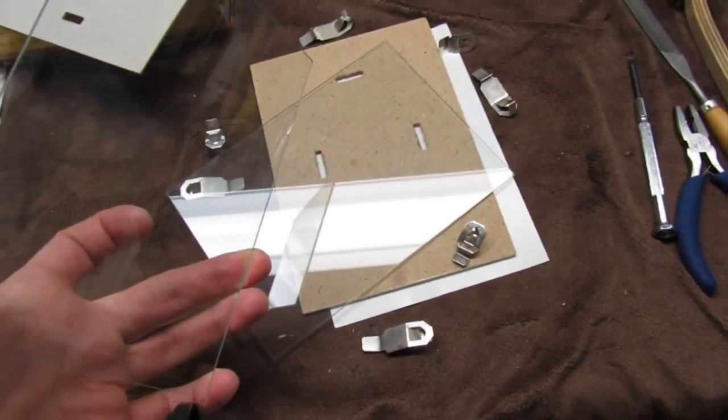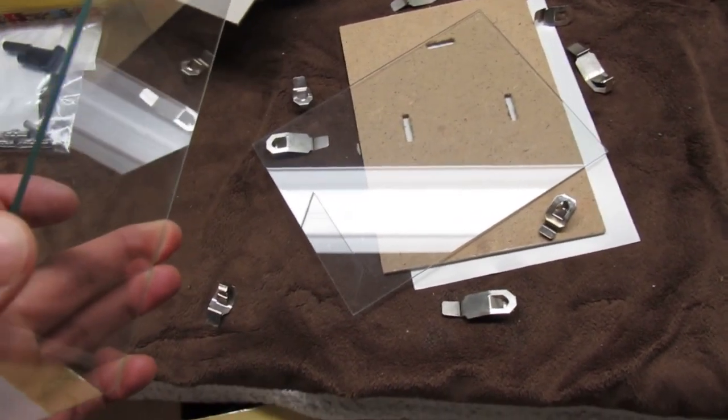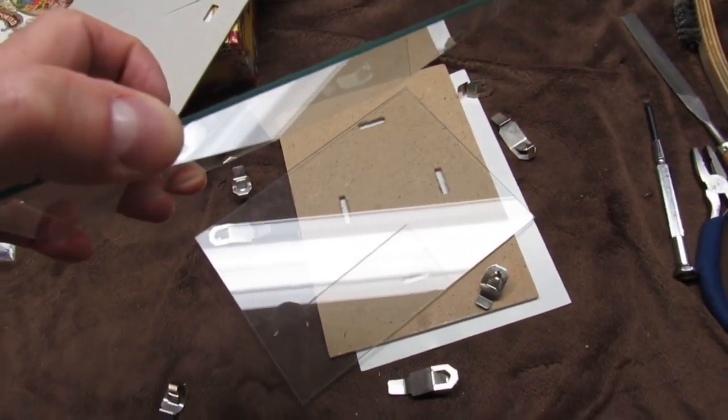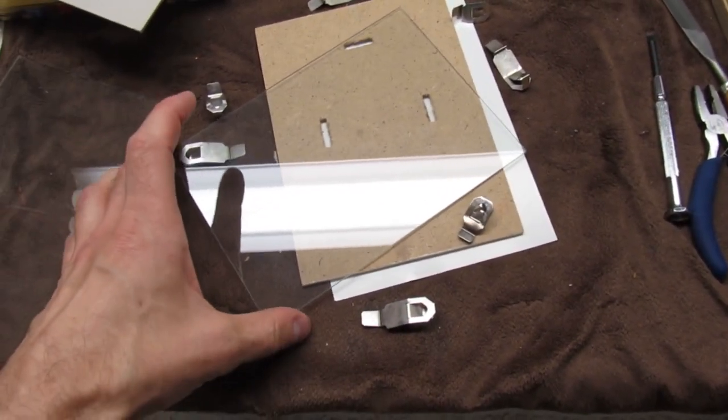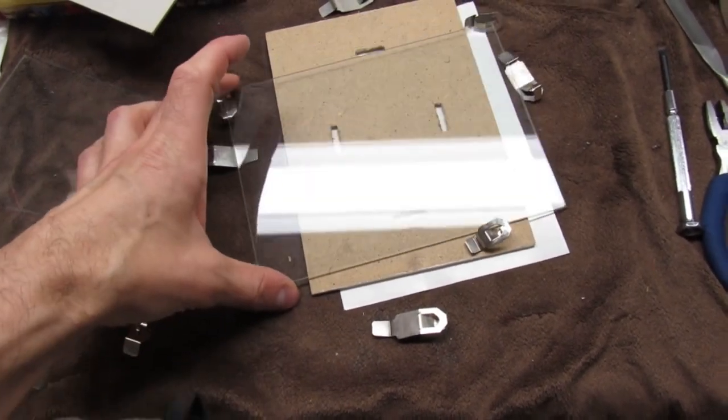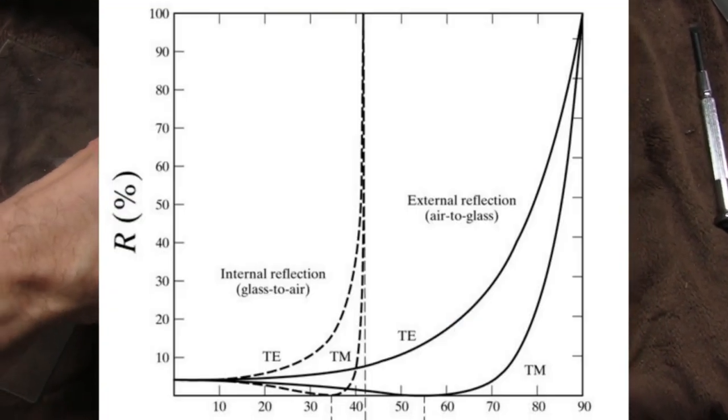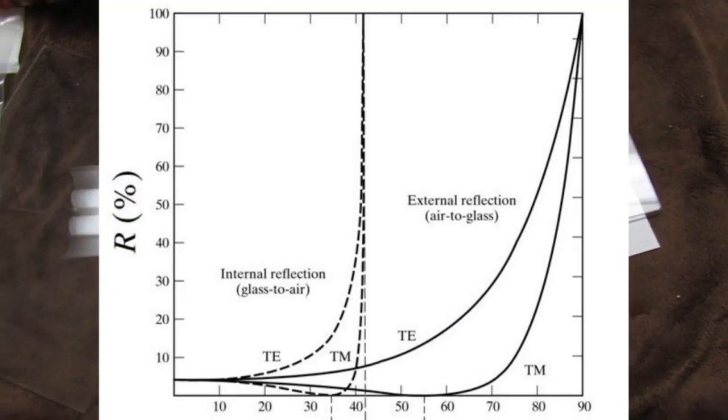If you have the reflection off of two plates, then you can control how much reflection you get if you're careful with how you do it. Also, you can take advantage of the TE and TM polarized waves having different reflections if you get the angles just right.